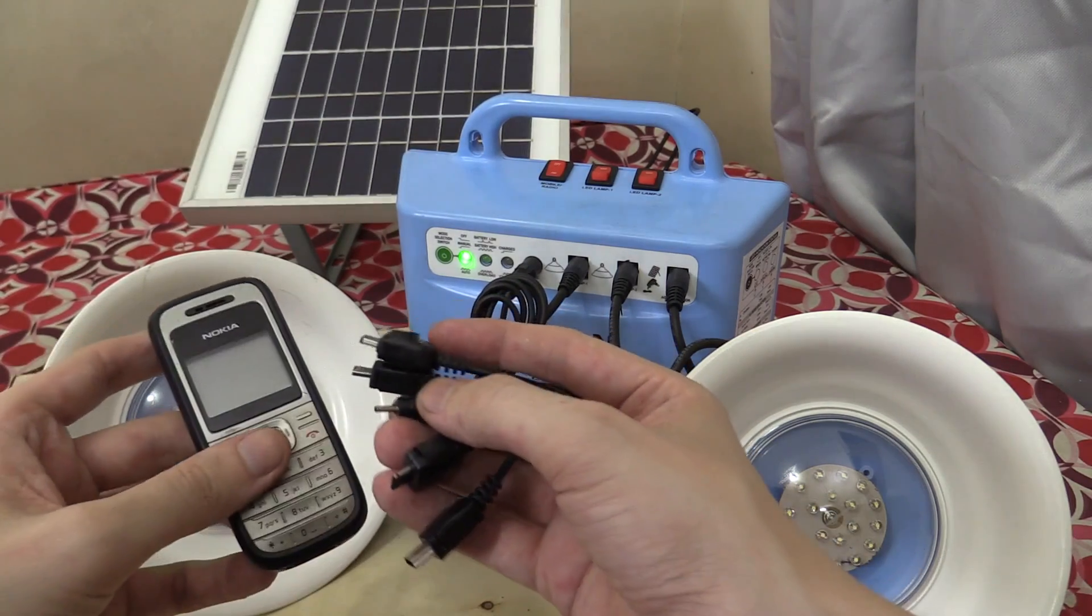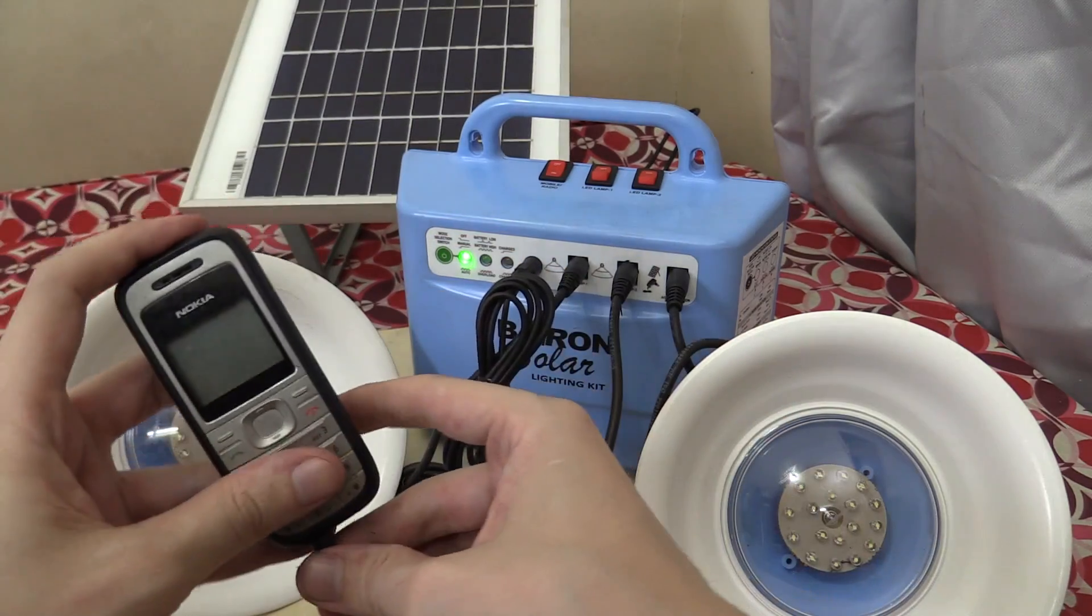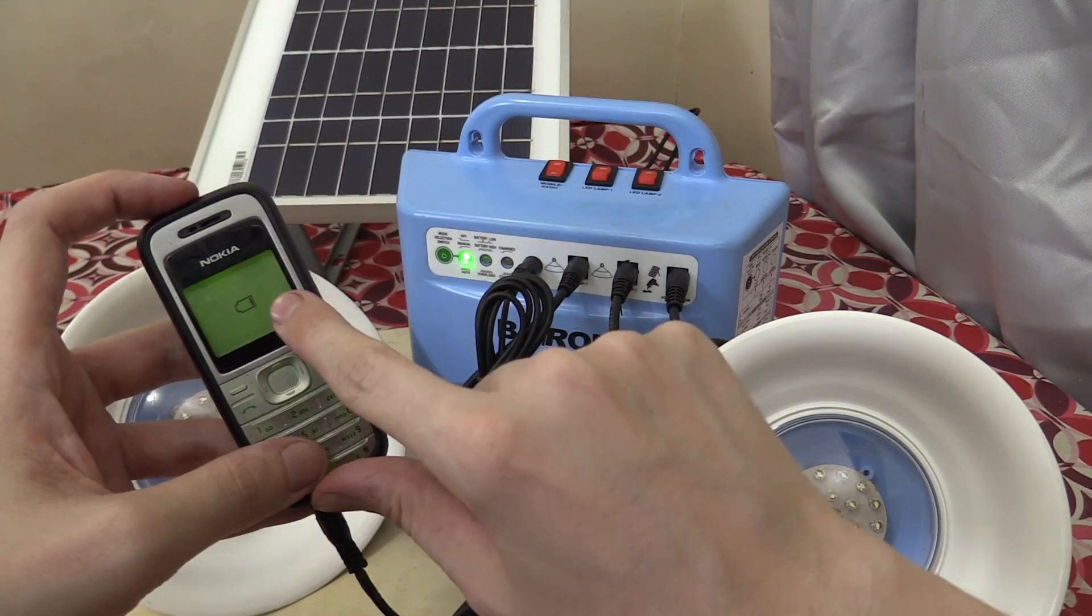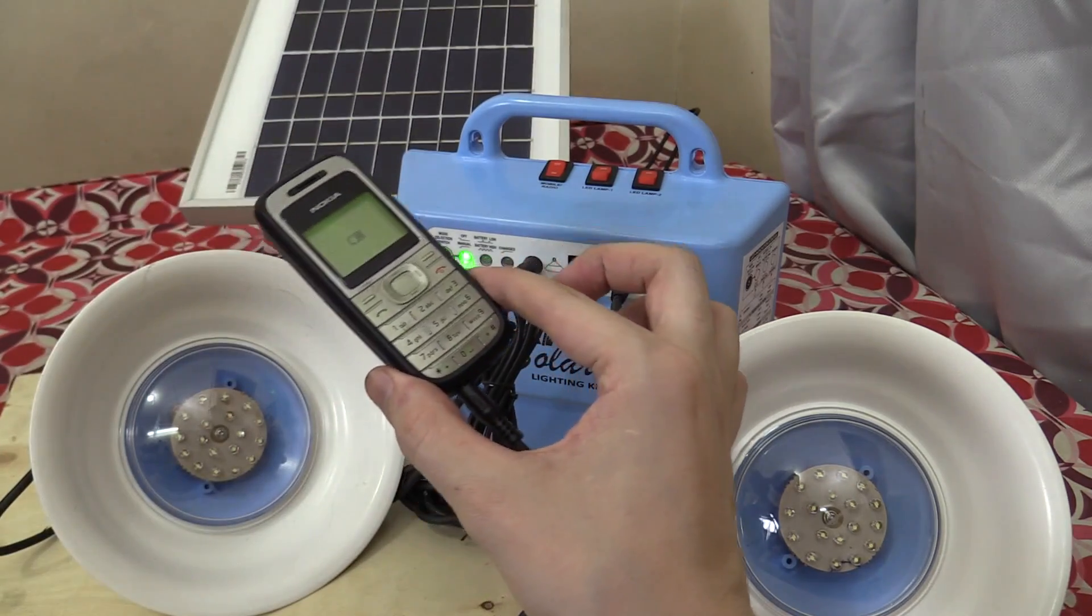What it can charge is one of these older style phones like this Nokia. So if we plug this in, you can see it starts charging. And the reason why it can manage this cell phone, but not the newer ones,